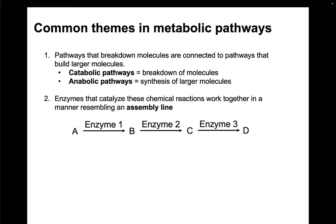Another theme is that enzymes catalyzing these chemical reactions — whether for catabolic or anabolic pathways — work together in a manner that resembles an assembly line in a factory. If we want to go from product A to product B, that reaction is catalyzed by enzyme 1. B then becomes a reactant for the second reaction, catalyzed by enzyme 2, and at the end we get product C, and so on. These reactions do go both ways, but we're mostly going to talk about them going in one direction during cellular metabolism.